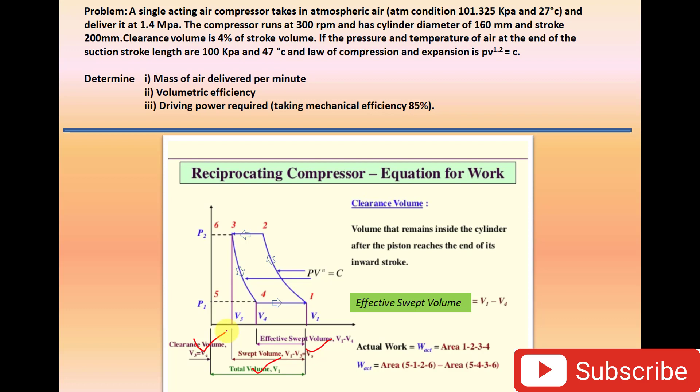The sweep volume is given by V1 minus V3, and the effective sweep volume is V1 minus V4. The work done for the reciprocating air compressor with clearance volume is the area under processes 1, 2, 3, and 4. Now, let's solve the problem.